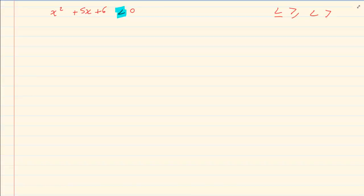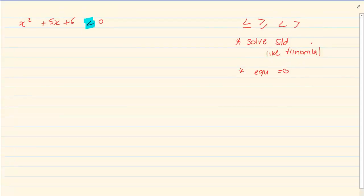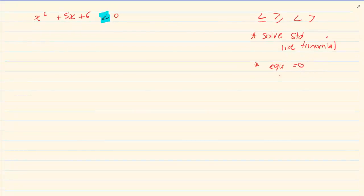Now when you're doing an inequality, first of all, you're going to solve it exactly as you had done trinomials. So solve standard like a trinomial. You get the equation equal to zero by moving it plus or minus. When I mean plus or minus, I mean you take over the plus 6, you make it minus 6, you take over the minus. You don't divide or multiply.